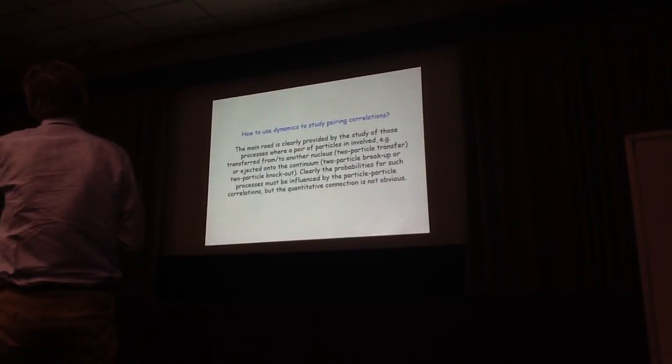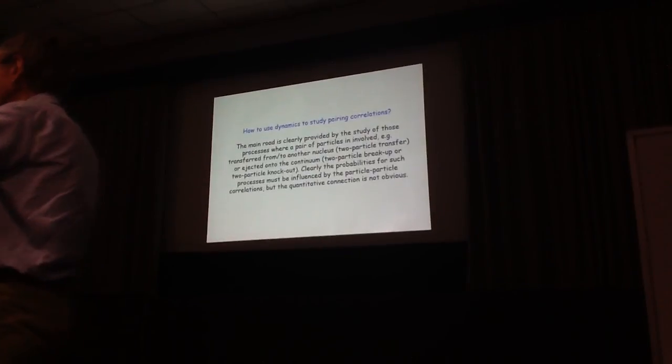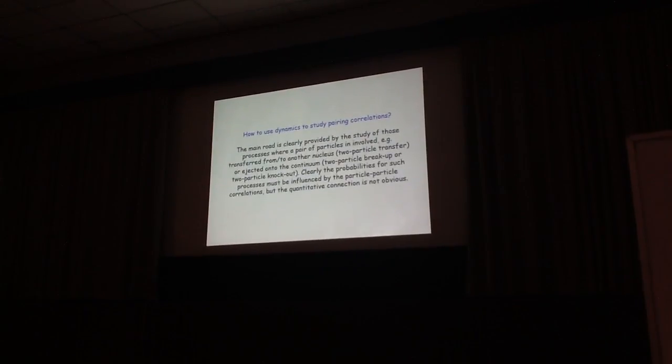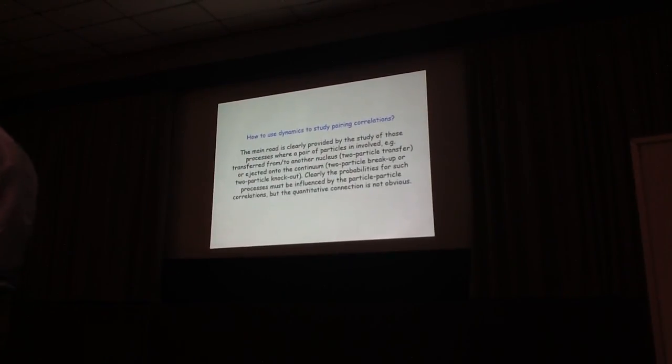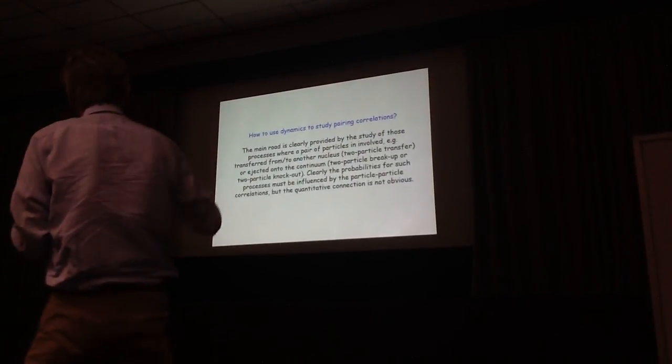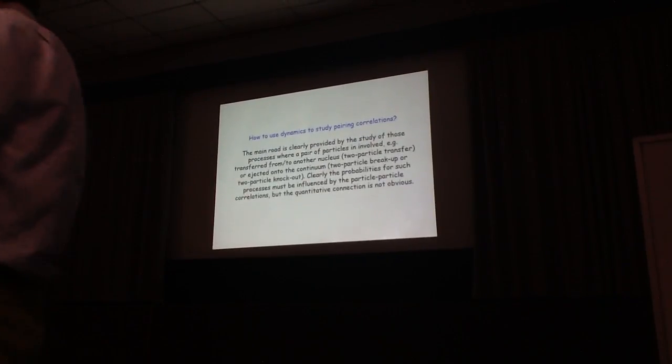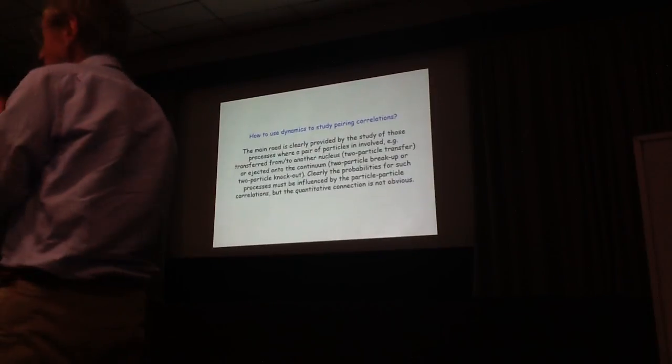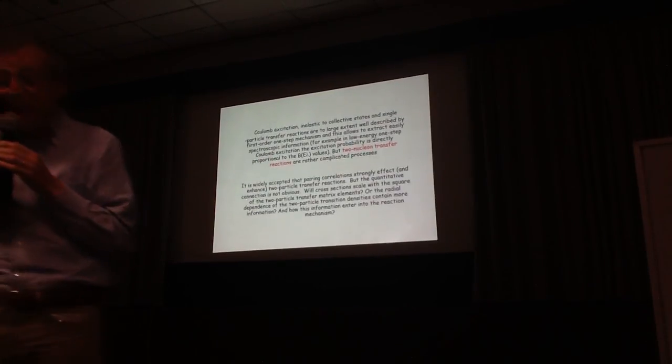And we'd also influence other processes that are associated with two particles in a more specific way. For example, two-particle knockout reaction or two-particle breakup reaction in Borromean nuclei. And it's clear that there is an influence on the pair correlation, but how to make it quantitative, that is a serious problem. It's a serious problem because other direct reactions are much more simpler from a reaction point of view.